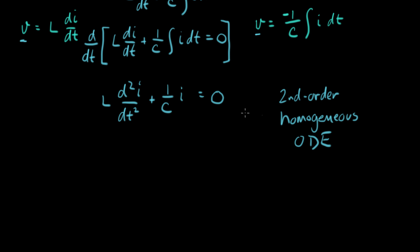It's homogeneous because it only has derivatives of I with respect to t and nothing else. The indicator is that this side is equal to zero. There's no forcing term over here on this side. So when you can write the equation this way, we say it's homogeneous. And it's called a second order equation because it has this second derivative right here.